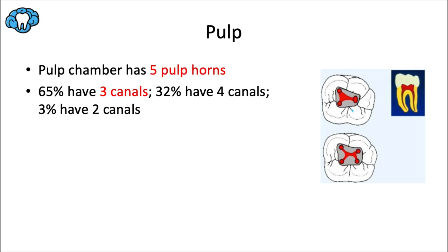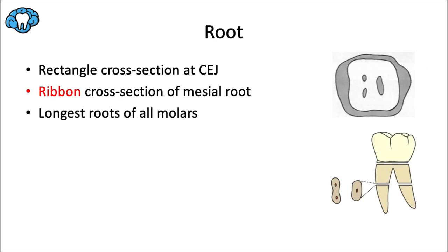In this diagram series, the dark gray area shows the widest portion of the crown — basically the crown outline — while the white inner part shows a cross-section slice right at the CEJ. The gray inner parts then correspond to what the pulp would look like at that slice.